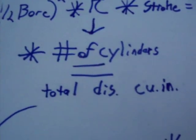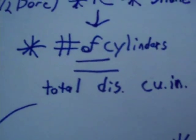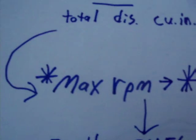It's the total displacement of your engine, that is the first part you need to know, and also the maximum RPMs you're going to be running your engine at.